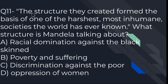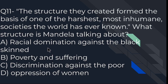'The structure they created formed the basis of one of the harshest, most inhumane societies the world has ever known.' What structure is Mandela talking about? The options are: racial domination against the black skinned, poverty and suffering, discrimination against the poor, or oppression of women. The right option is A — racial domination against the black skinned.